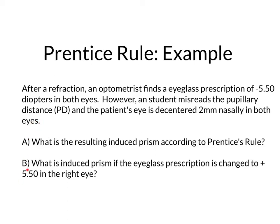There are two parts to this question. The first part is: what is the resulting induced prism according to Prentice's Rule? The second part is: what is the induced prism if the eyeglass prescription is changed to plus 5.50 in the right eye?